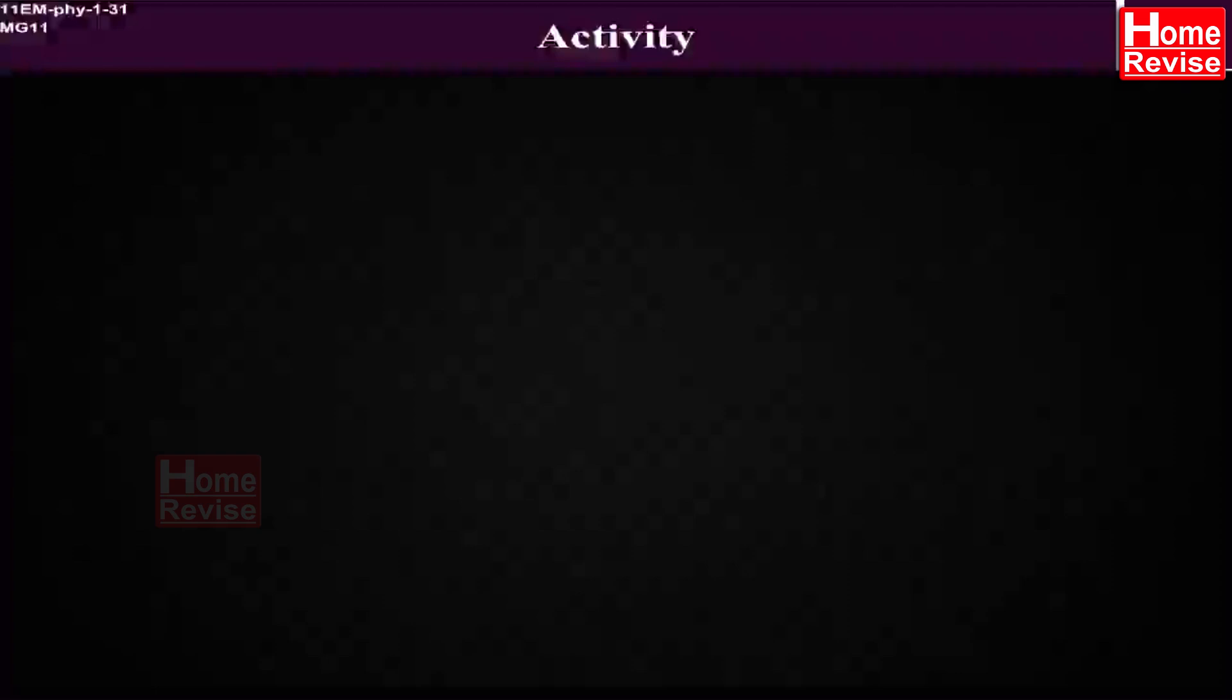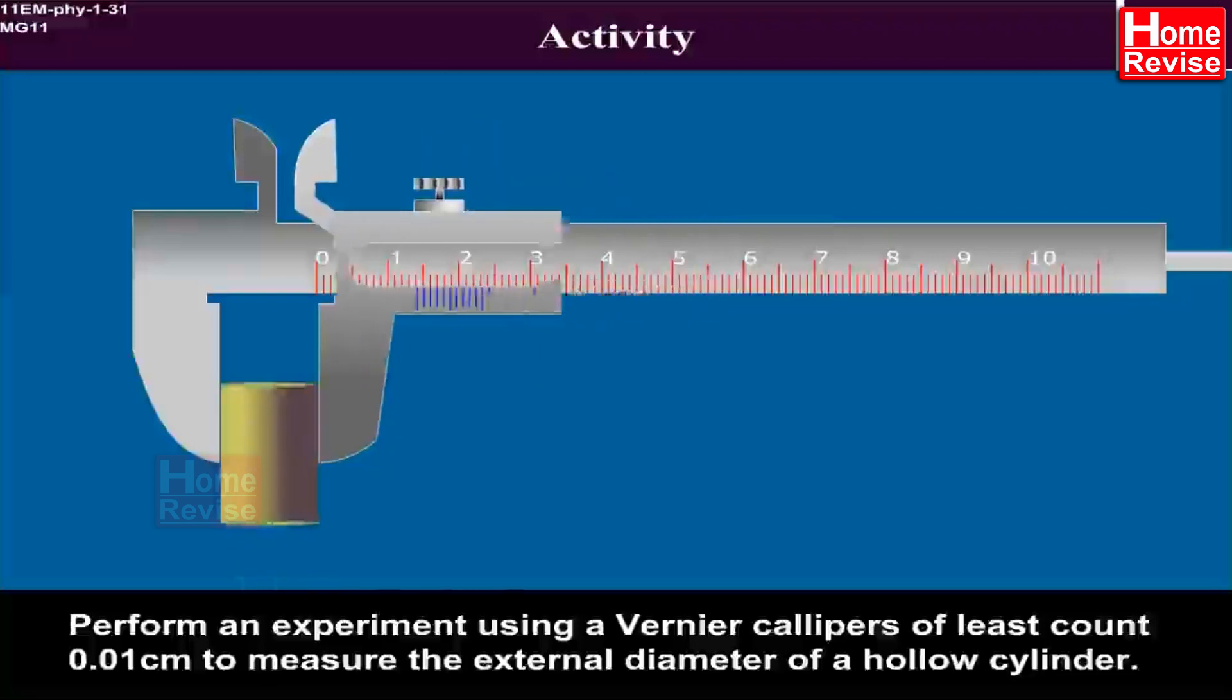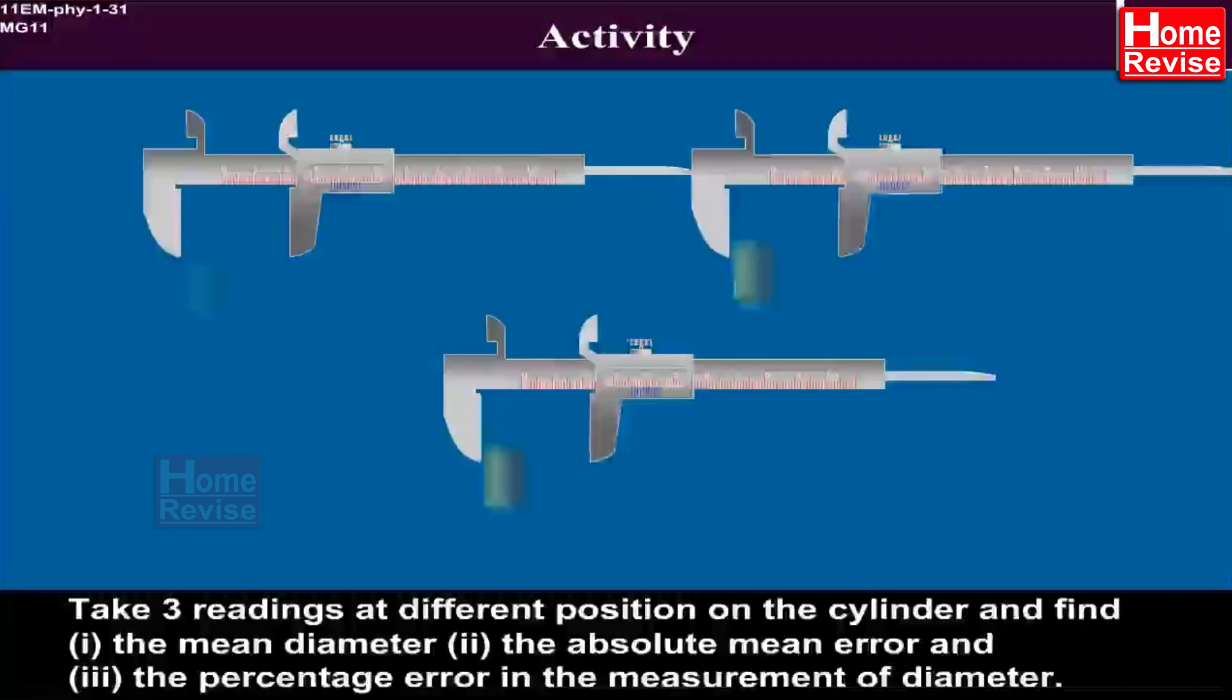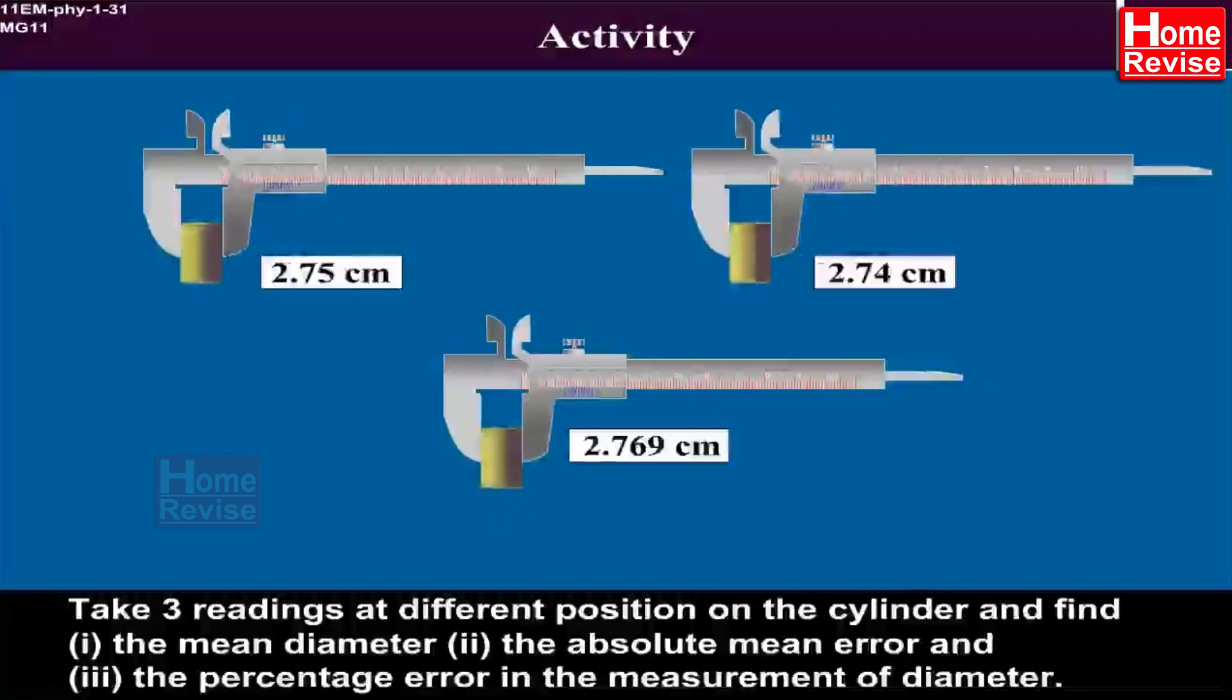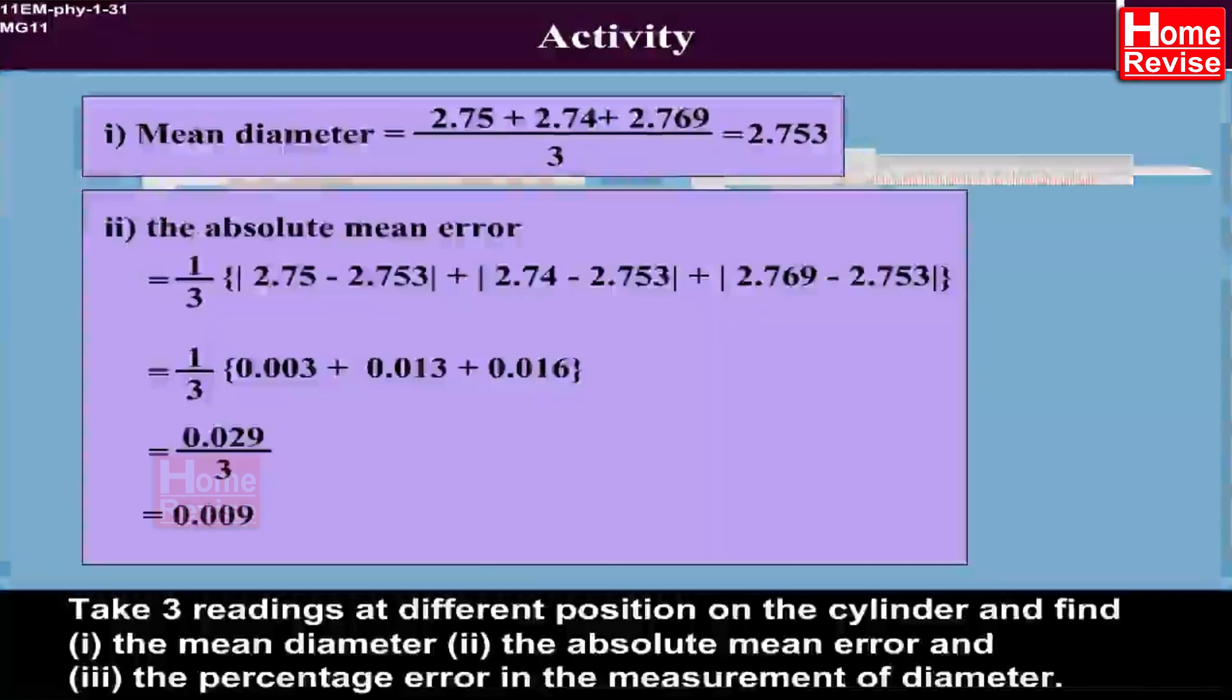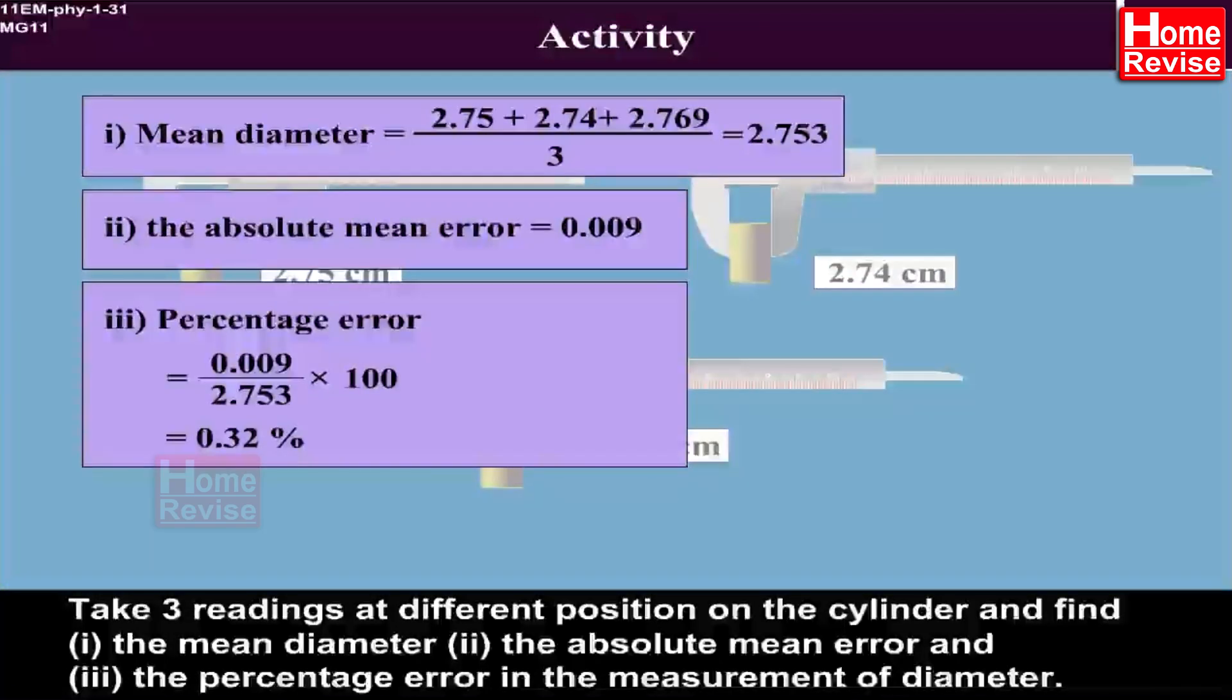Activity: Perform an experiment using a vernier caliper of least count 0.01 cm to measure the external diameter of a hollow cylinder. Take three readings at different positions on the cylinder and find 1. The mean diameter 2. The absolute mean error and 3. The percentage error in the measurement of diameter.